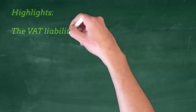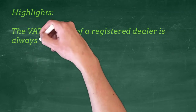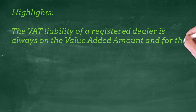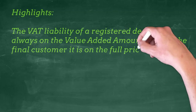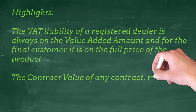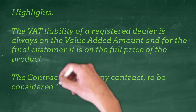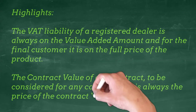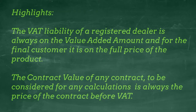Let us conclude this session with these two points. The VAT liability of a registered dealer is always on the value added amount, and for the final customer it is on the full price of the product. The contract value of any contract to be considered for any calculation is always the price of the contract before VAT.